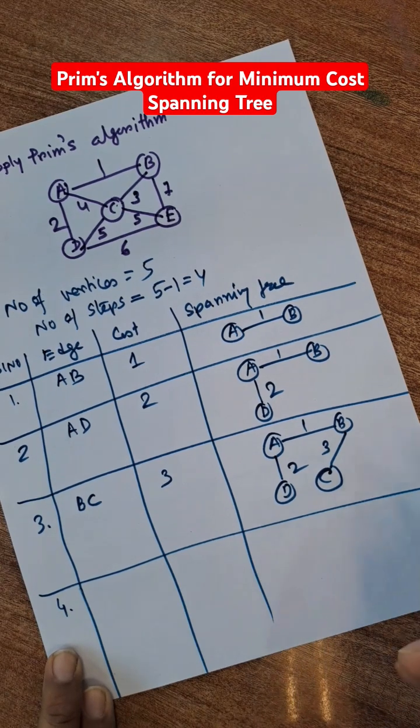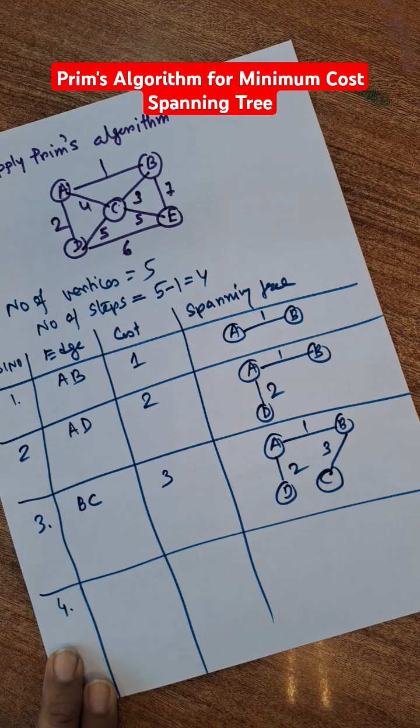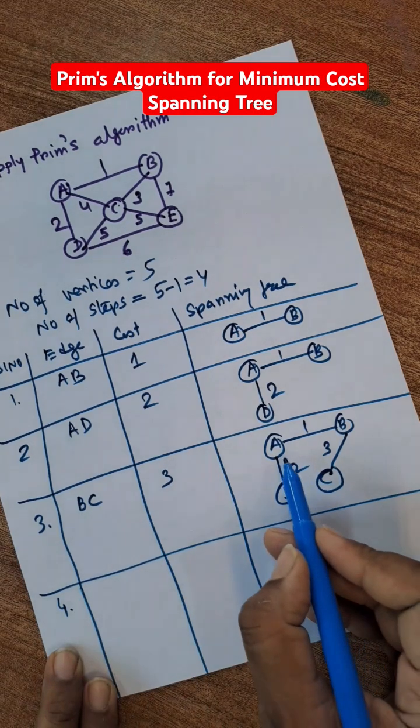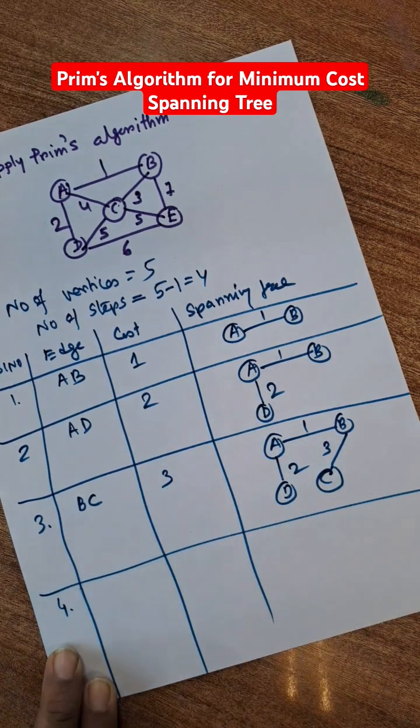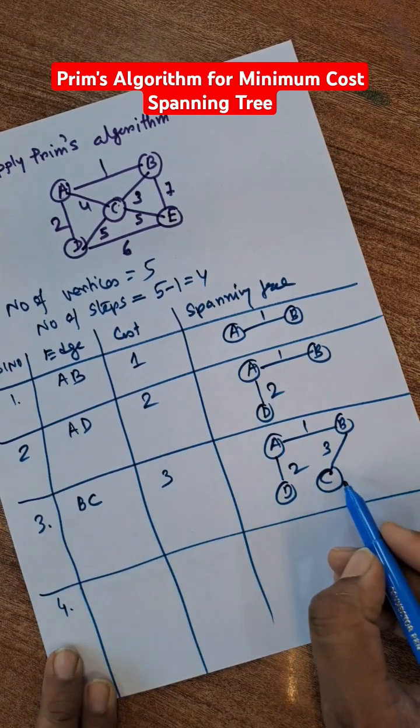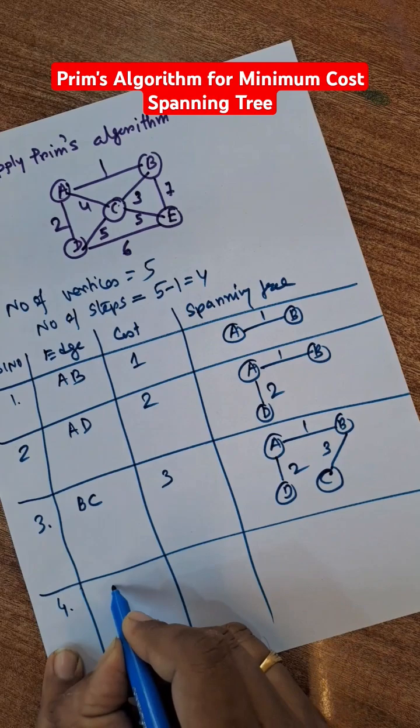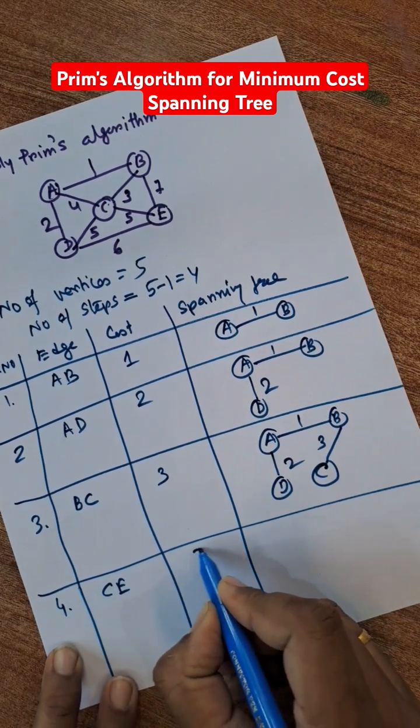Now we need to select the next minimum from either A, B, C, or D. If we select 4, then there will be a closed path. If we select 5, then there will be a closed path. Then we can select 5, that is the next minimum, that is CE. Select CE.